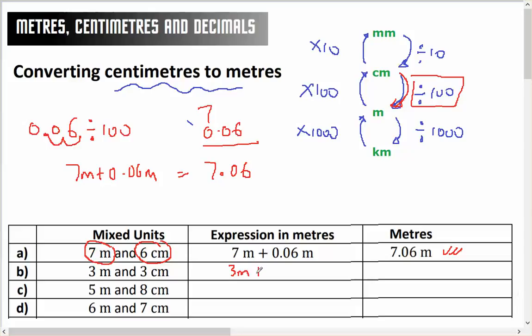So 3 metres plus 3 centimetres, divided by 100, move the decimal point 2 spots, is 0.03 metres, therefore 3.03 metres.